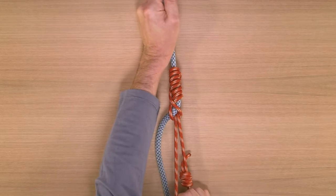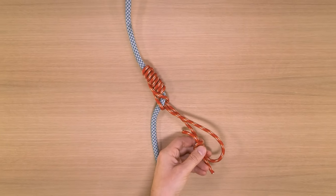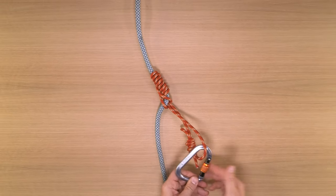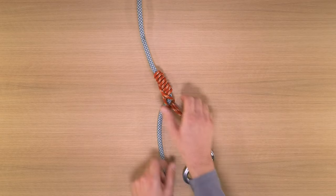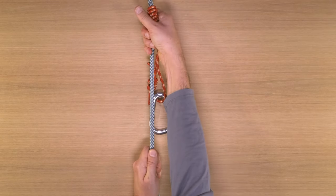Always test a friction hitch. A klemheist binds a little more readily than an autoblock, so if you're having trouble getting a hitch to bite, the klemheist will work better than an autoblock, but it doesn't bind quite as readily as a prussic. It's a little easier to work with.